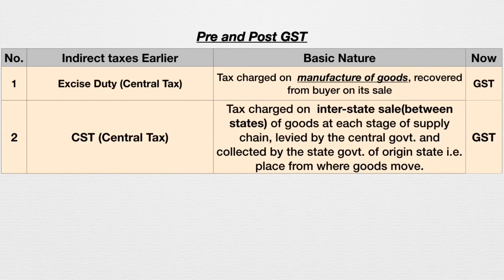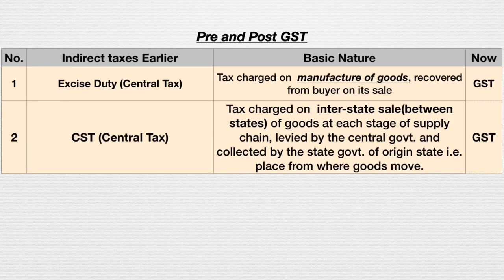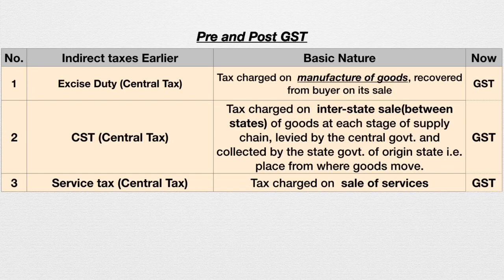Second is CST — a central tax levied by the central government. Its basic nature is a tax charged on interstate sale between states of goods at each stage of the supply chain, levied by the central government and collected by the state government of the origin state — that is, the place from where goods move. For example, a dealer in Karnataka selling his product to a customer in another state like Odisha would collect CST and pay it to the state government of Karnataka, the origin state.